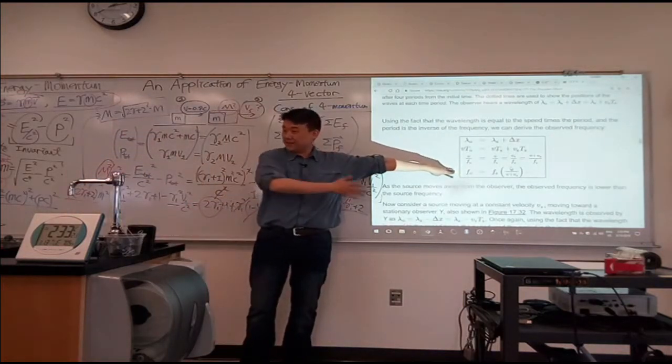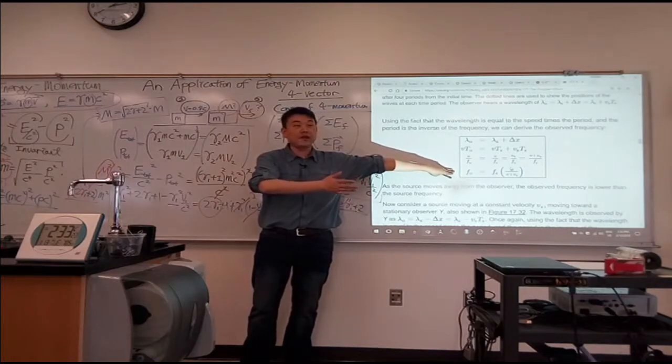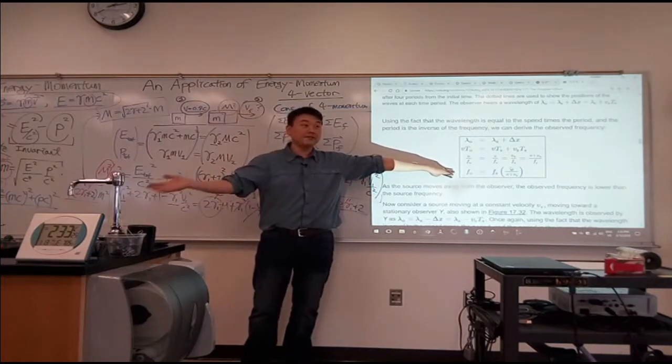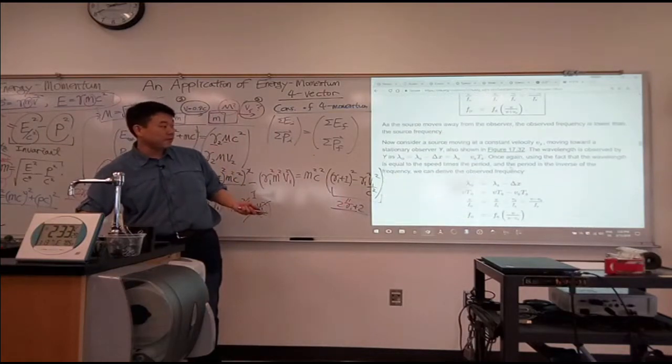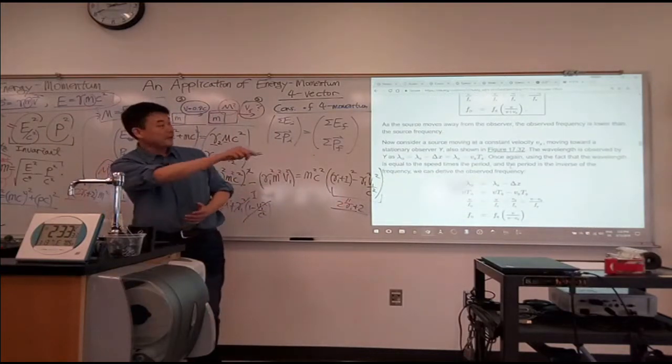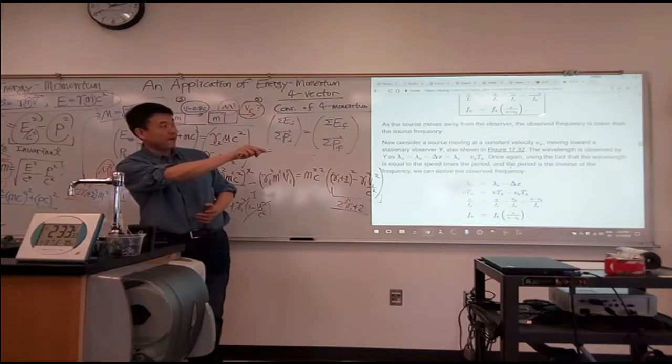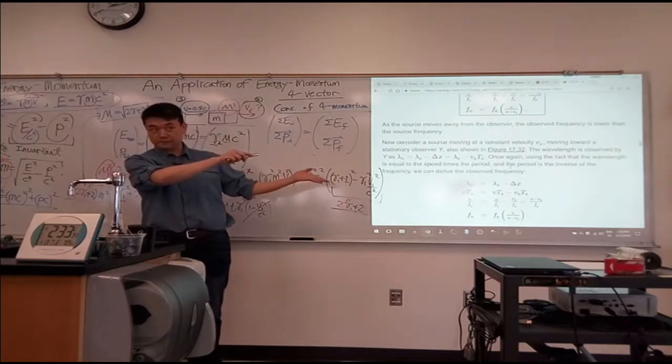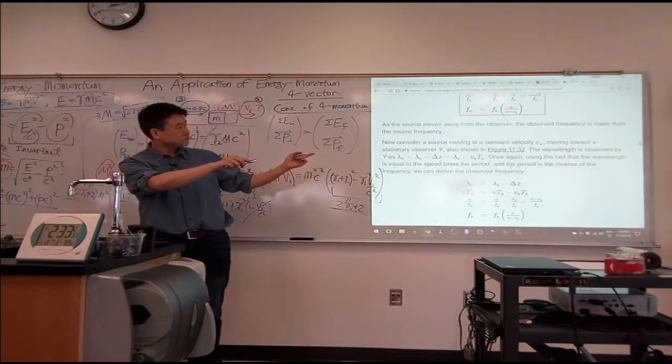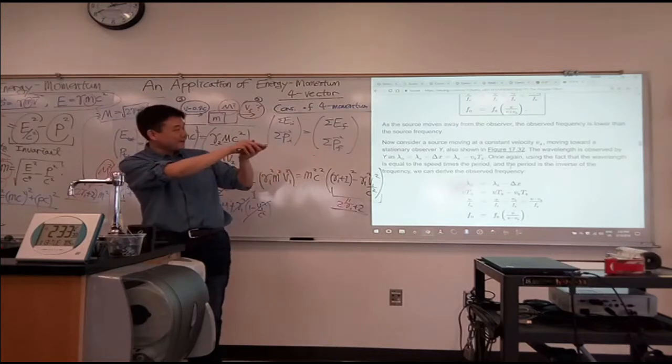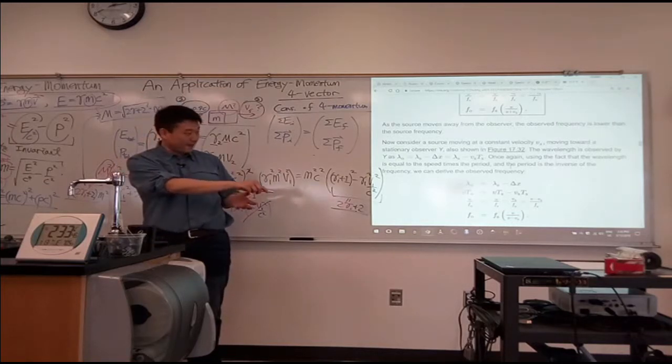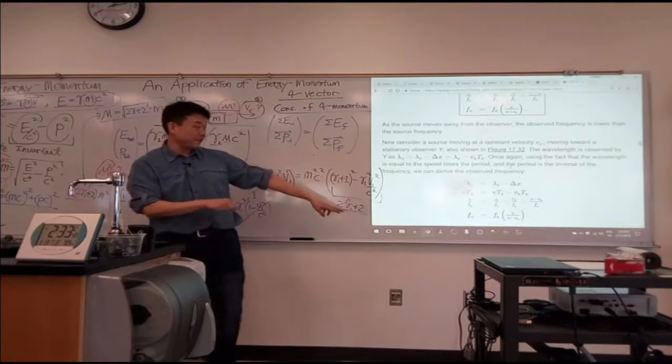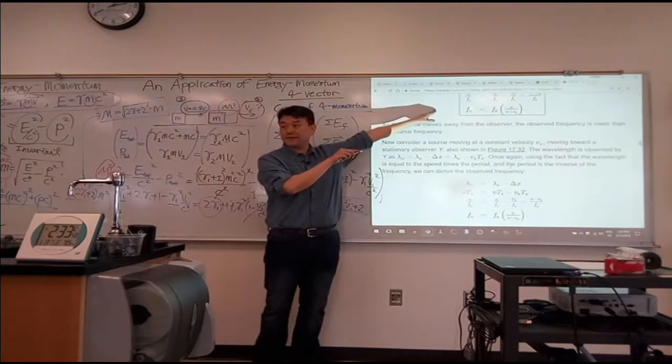Who's moving, source or the observer? So here the source is moving, right? So that figure I think goes with something else. Here, stationary source, moving observer, that's the formula that they derived here. And there's an entirely separate formula when you have stationary observer and the source is the one that's doing the moving.